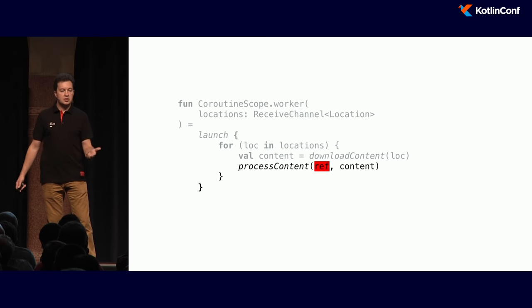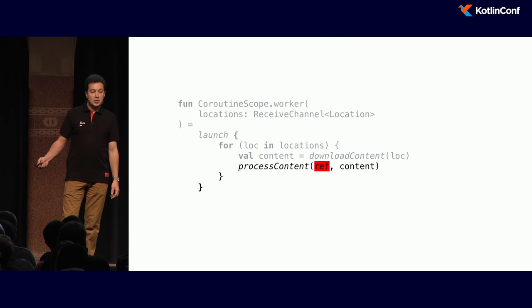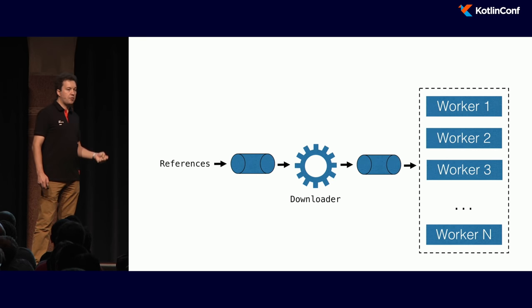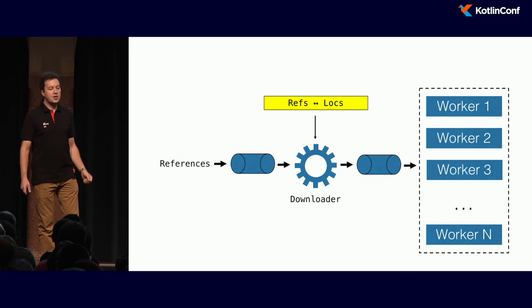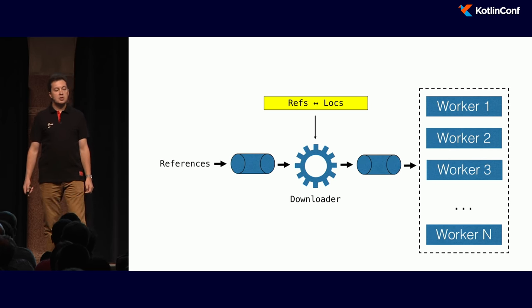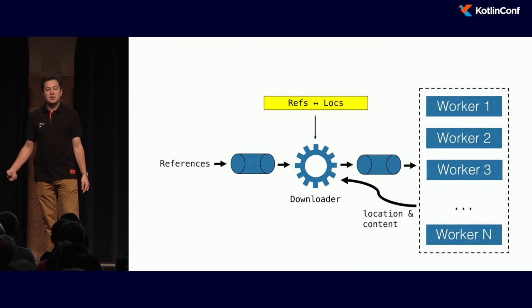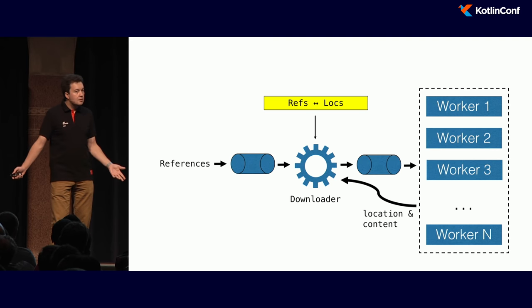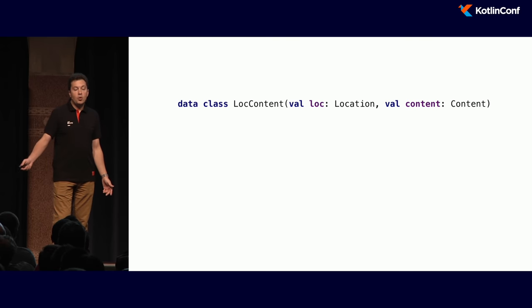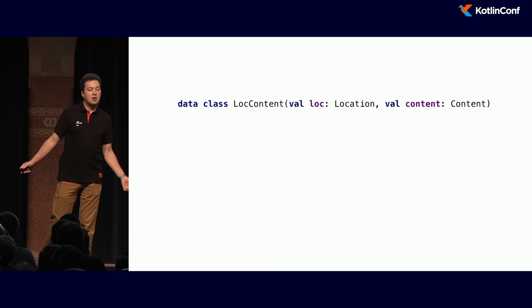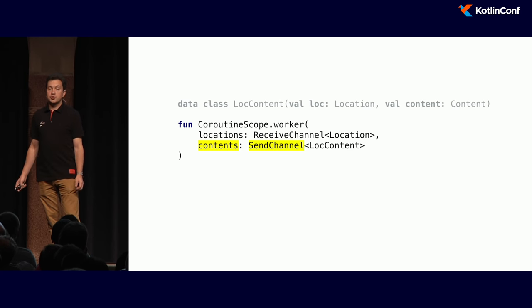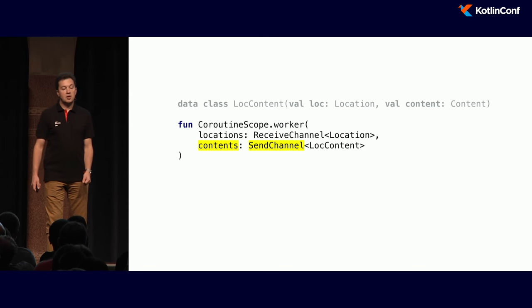So how do we finish our code so it actually works? Looking at our architecture: what piece actually knows about the mapping between references and locations? It's the downloader — the coroutine that resolves references to locations. So we should deliver the results back to the downloader. How? Channels again. We create a data class with location and content, and now in our worker we send the results back. We add a third parameter to the downloader — `contents`, a `ReceiveChannel` — for the downloader to receive what the workers downloaded.